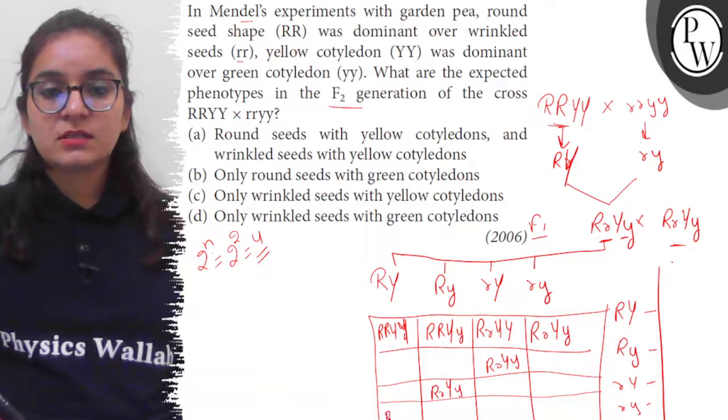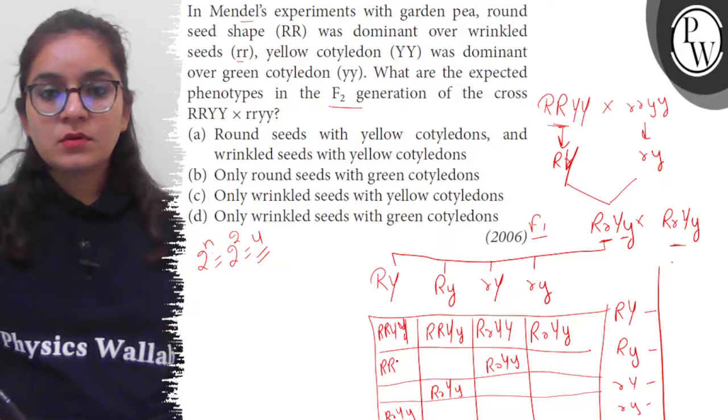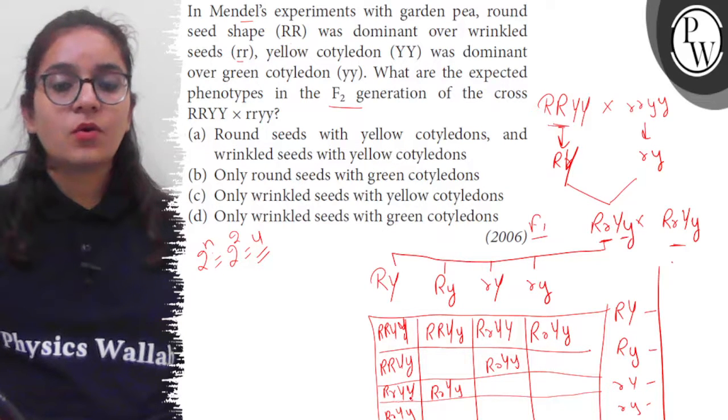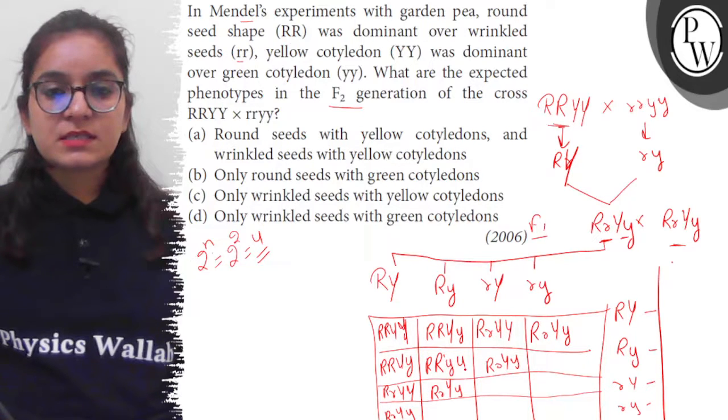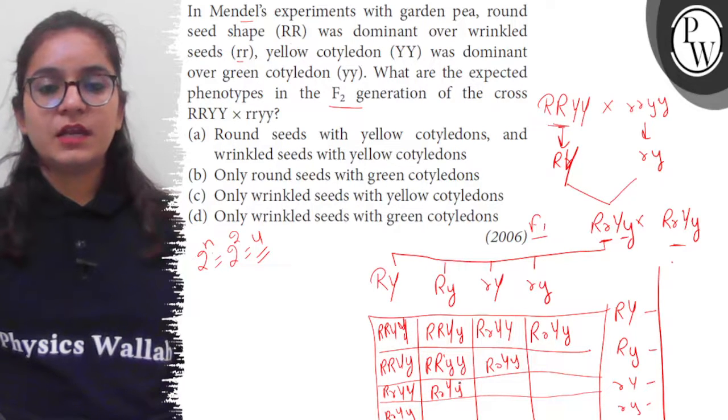Heterozygous round, heterozygous yellow. Here, homozygous round, heterozygous yellow. Heterozygous round, homozygous yellow. Homozygous round - this is the same - homozygous yellow. Green, green.